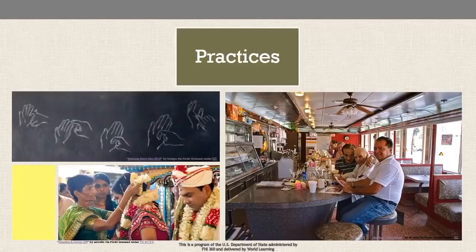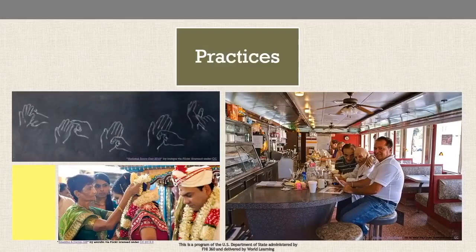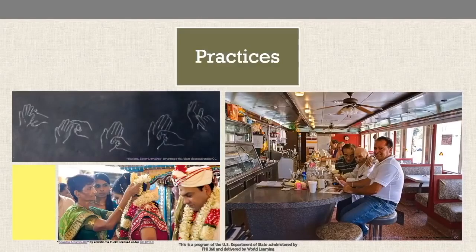Perspectives shape practices. Practices include the traditions and typical behaviors in a culture. The way people communicate can differ greatly from one culture to another, not just in terms of language, but also what people talk about, with whom, how direct they are when communicating, the gestures they use, their use of eye contact, etc. Practices include other behaviors as well, from the formal — for example, wedding ceremony traditions — to the informal, such as how people dress and eat on a day-to-day basis.